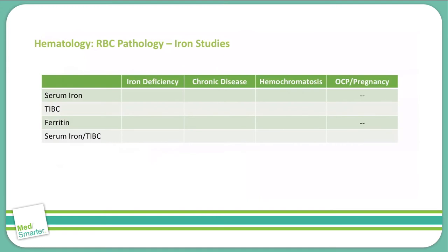Moving on, while we're talking about different iron studies, let's discuss what values you will see with these iron studies in different types of diseases. Oftentimes you'll see this on the USMLE and they will give you the results of studies and ask you what is this disease. So if you can have a very strong idea of what each disease shows on the iron studies, you can answer questions very easily.